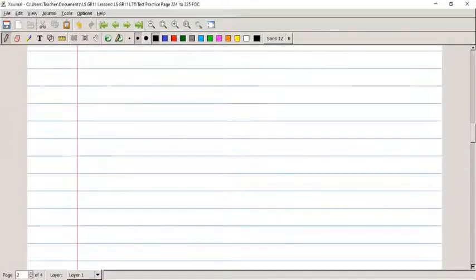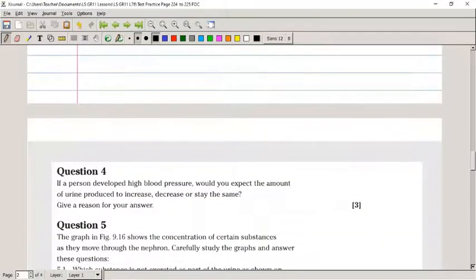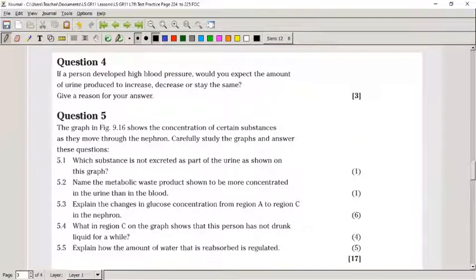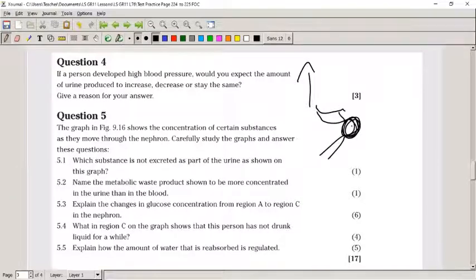If a person developed high blood pressure, would you expect the amount of urine produced to increase, decrease, or stay the same? Give a reason for your answer. Most probably, it would increase the number of urine produced. The main reason for this is if blood pressure becomes more, then more pressure in the glomerulus and more liquid will be pushed out into the nephron.